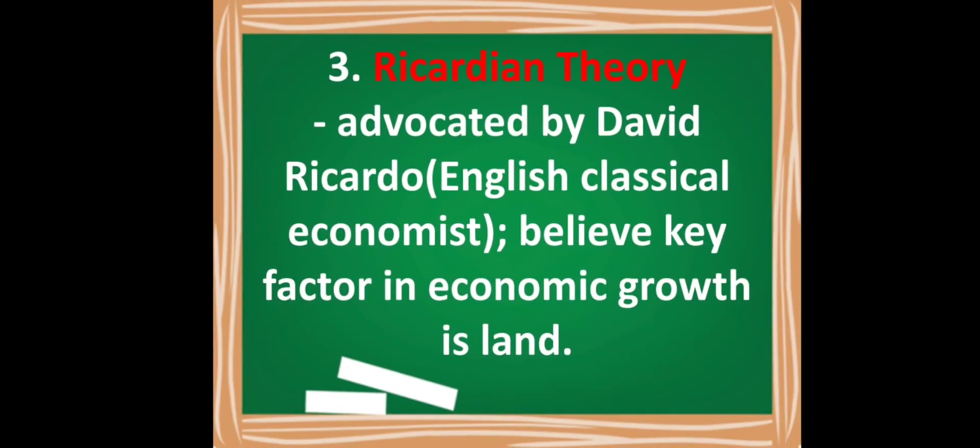The third theory is the Ricardian theory, advocated by David Ricardo. He is an English classical economist who believes that the key factor in economic growth is land. When the key factor of economic growth is land, that is the Ricardian theory.